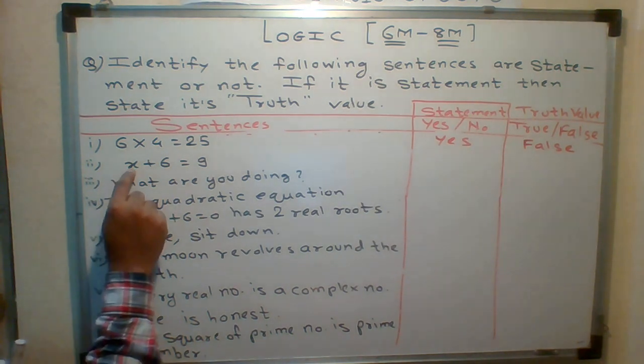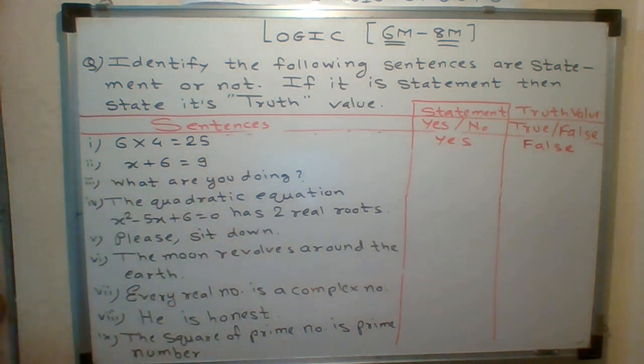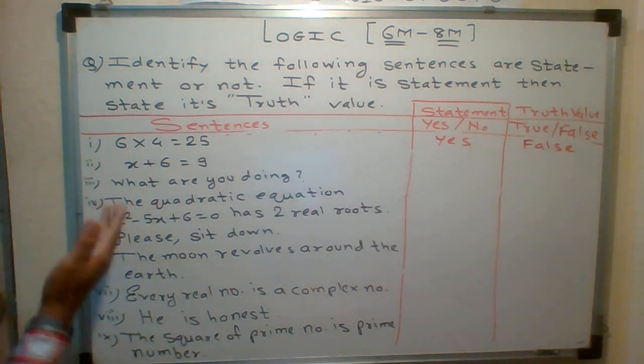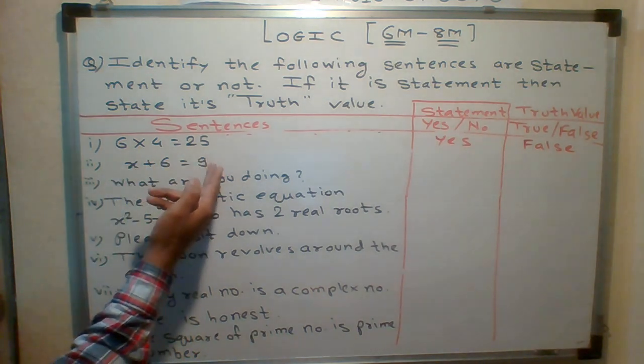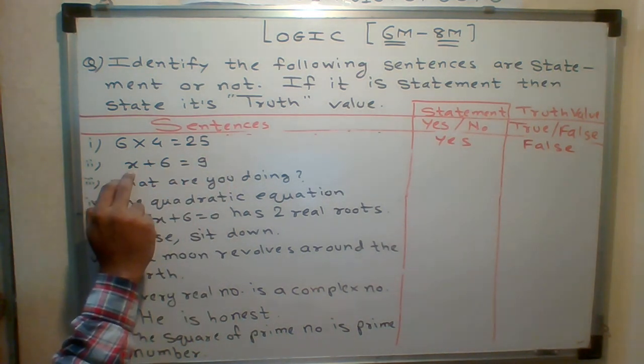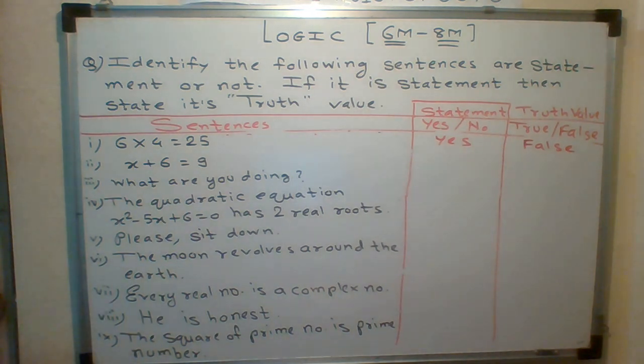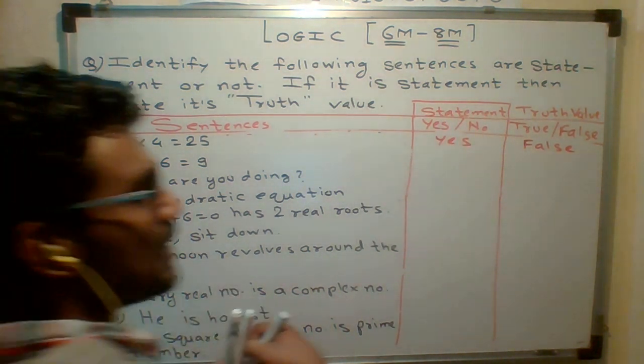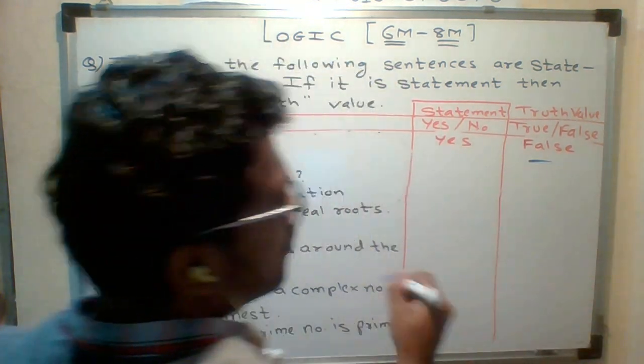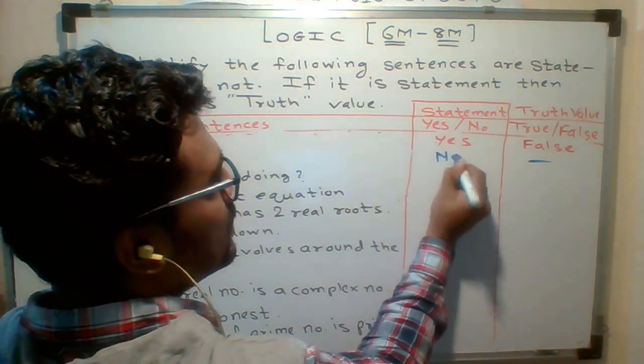Now you can see x plus 6 equals to 9. What is x? We don't know whether x value is confirmed, whether x is 3 or whether x is 2. If x is 2, 2 plus 6 is 8 which is wrong. And if x is 3, 3 plus 6 is 9. We don't know whether x is 3 or 2. That's why we are unable to decide whether it is true or false. That's why it is no, it is not a statement.